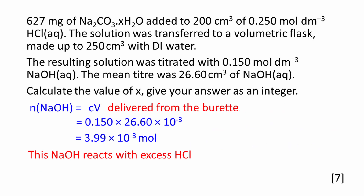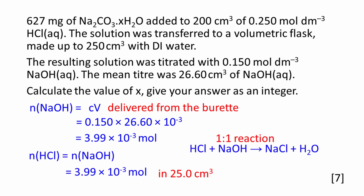The amount of sodium hydroxide delivered from the burette can be calculated using: amount = concentration × volume. This equals 3.99 × 10⁻³ moles. From the balanced equation, the reaction between hydrochloric acid and NaOH is a one-to-one reaction, so the amount of hydrochloric acid present in the conical flask at the beginning of the titration is also 3.99 × 10⁻³ moles.